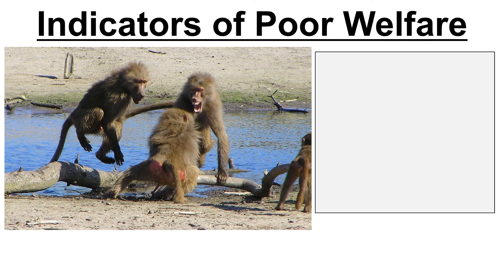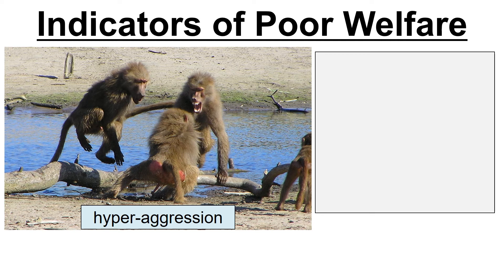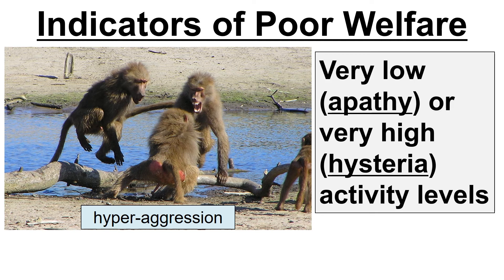The final indicator covers two ends of the spectrum. One is very low activity levels — excessive sleeping, or apathy. The other is very high activity levels — hysteria or hyper-aggression. The animal is at one or the other end of the activity spectrum rather than a happy medium.